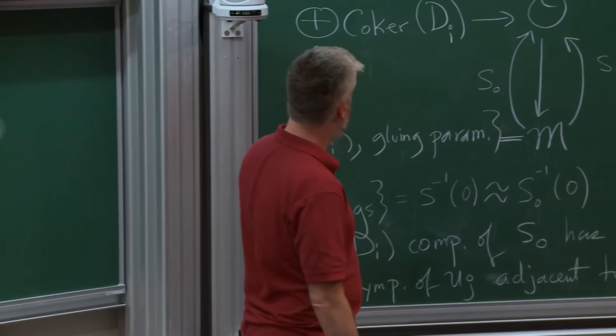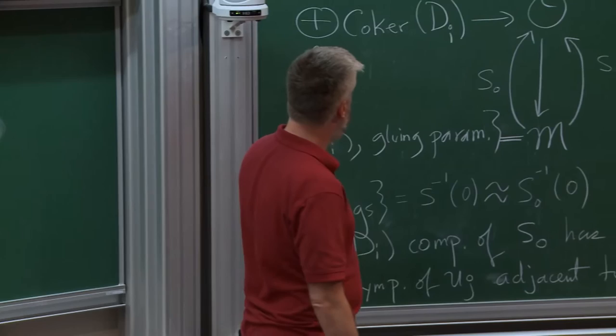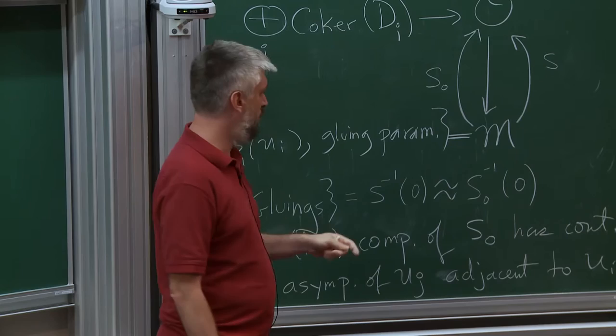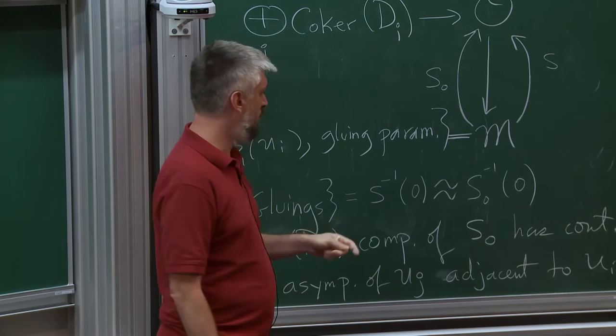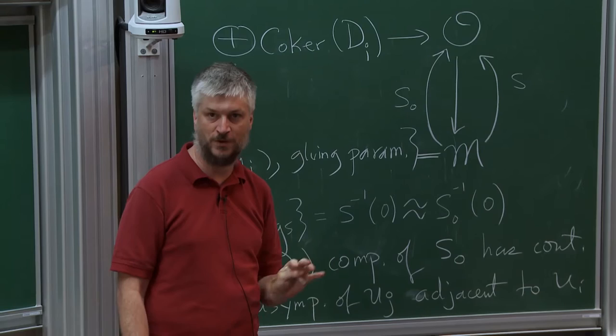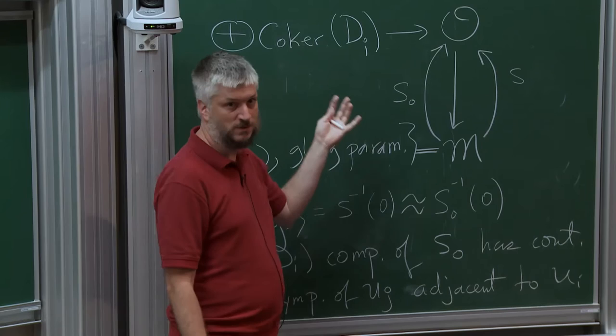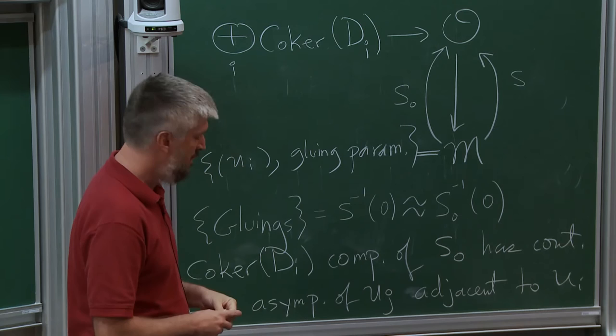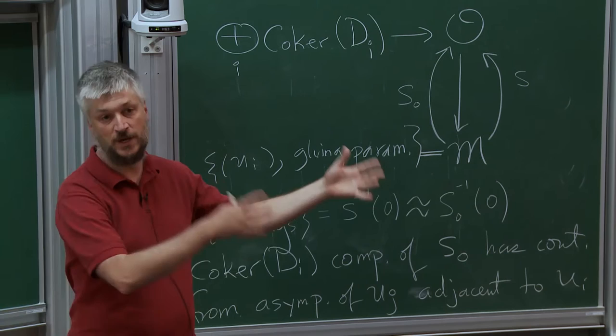The second best situation is where these operators are maybe not surjective, but their co-kernels have constant dimension. So as you move around in the moduli space, the dimension of the co-kernel doesn't jump, so you have an actual vector bundle over the space M of configurations where the fiber is the sum of the co-kernels of all of the operators for all of the pieces. This is when we have a well-defined obstruction bundle. The worst case is where these co-kernel dimensions may jump — then you're in Kuranishi land or polyfold land, and you really need to do something fancy. So this obstruction bundle case is sort of in between the classical case and the general case where you need really high technology.